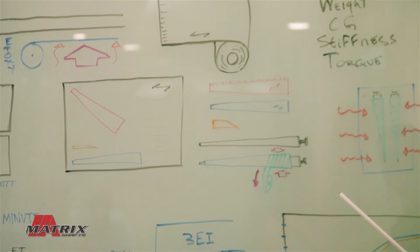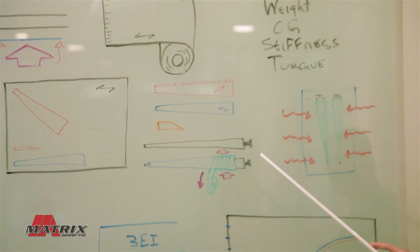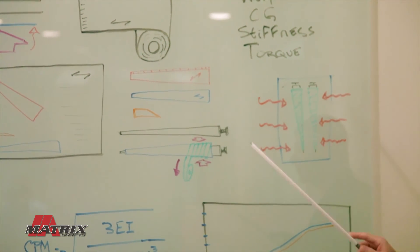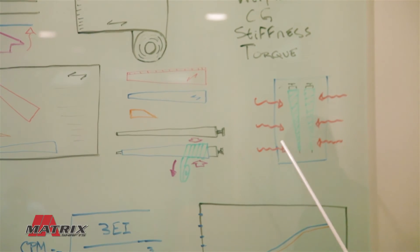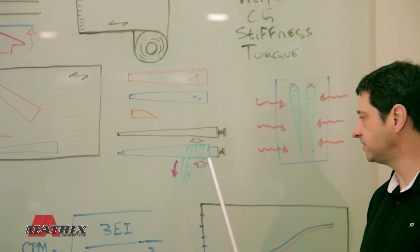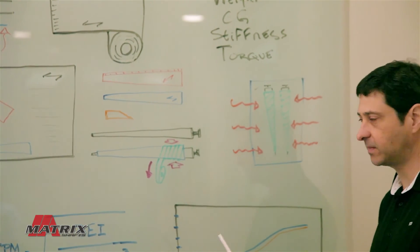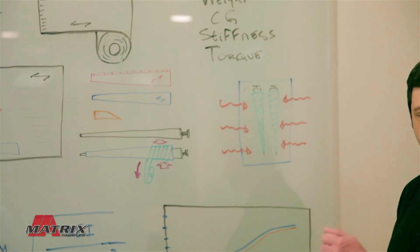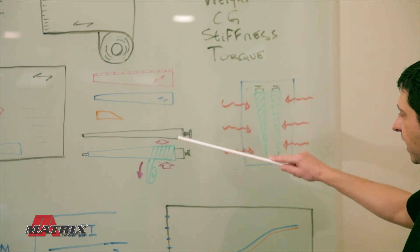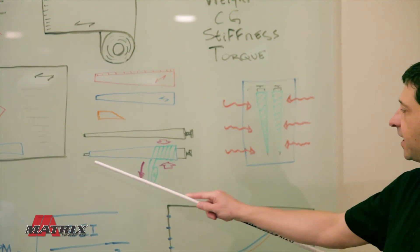After you have your plies cut out and kitted together, you start rolling them on one at a time on a steel mandrel. Once you get all your plies on, you wrap the entire assembly with a cellotape. When you apply the cellotape, it has tension on it, and that applies pressure to the entire part.